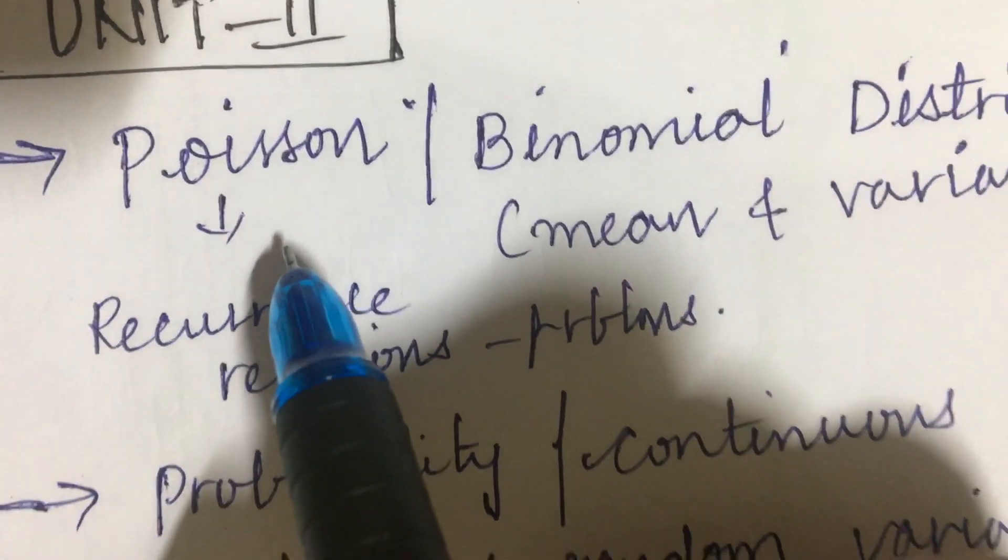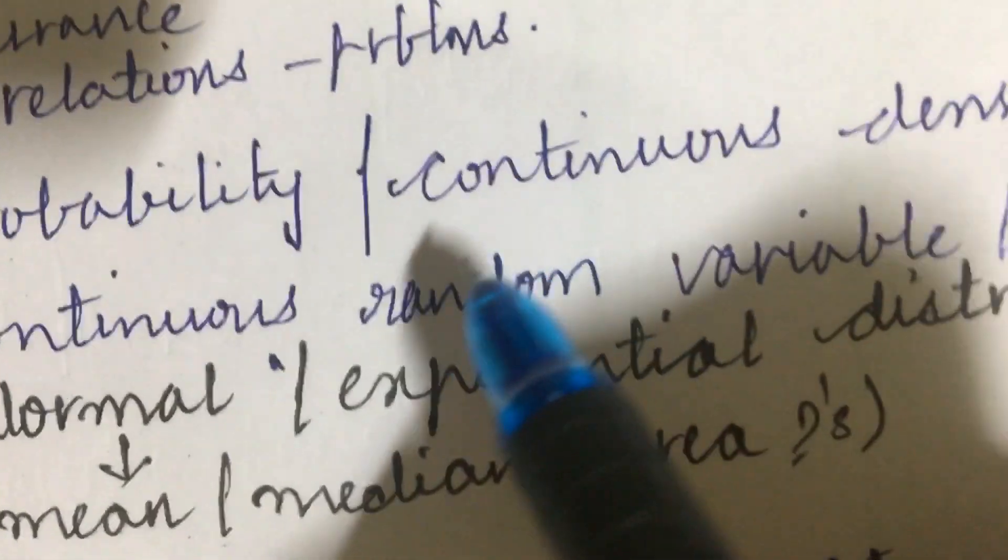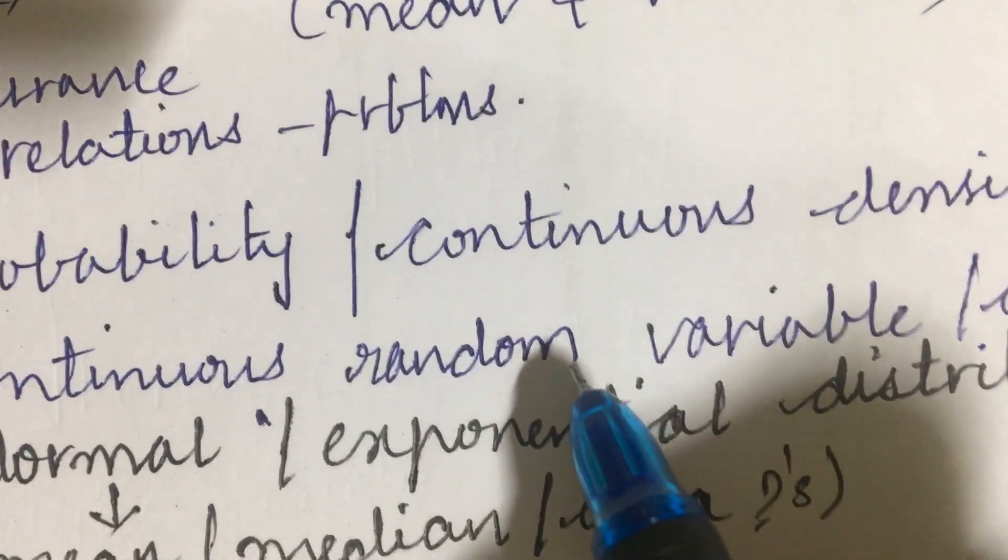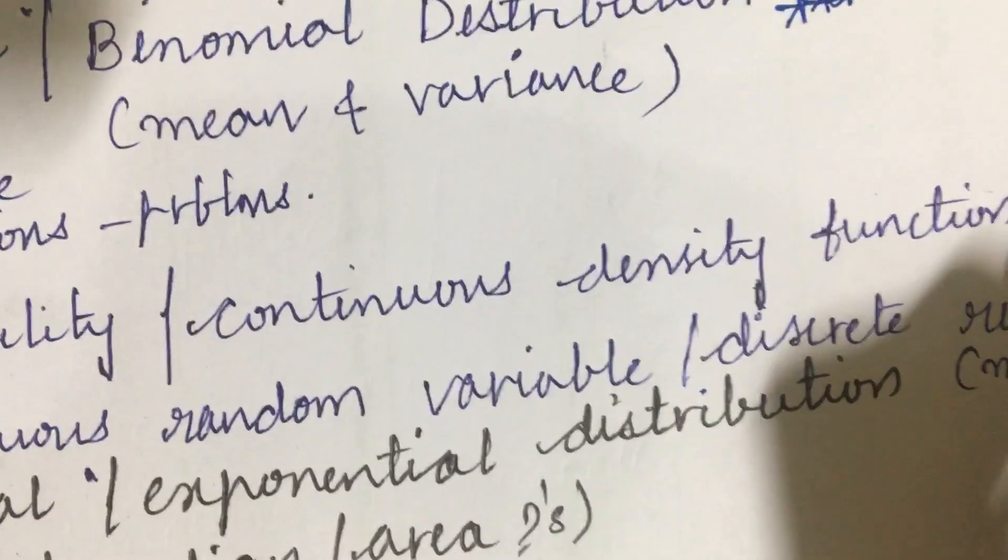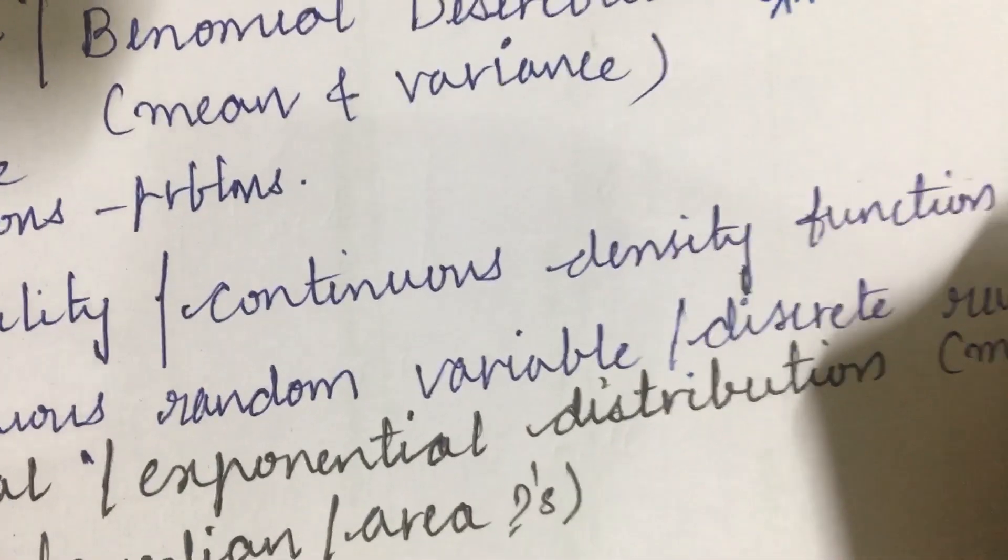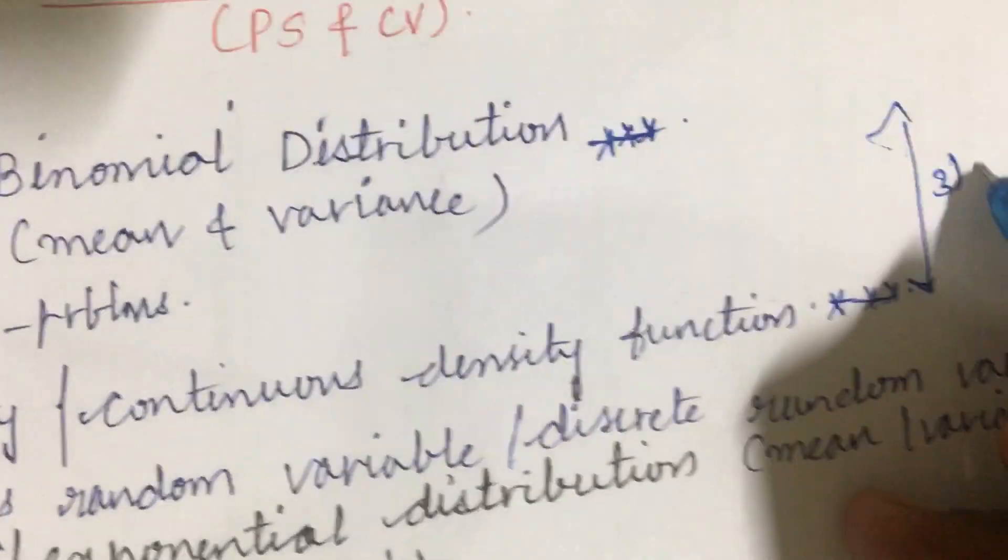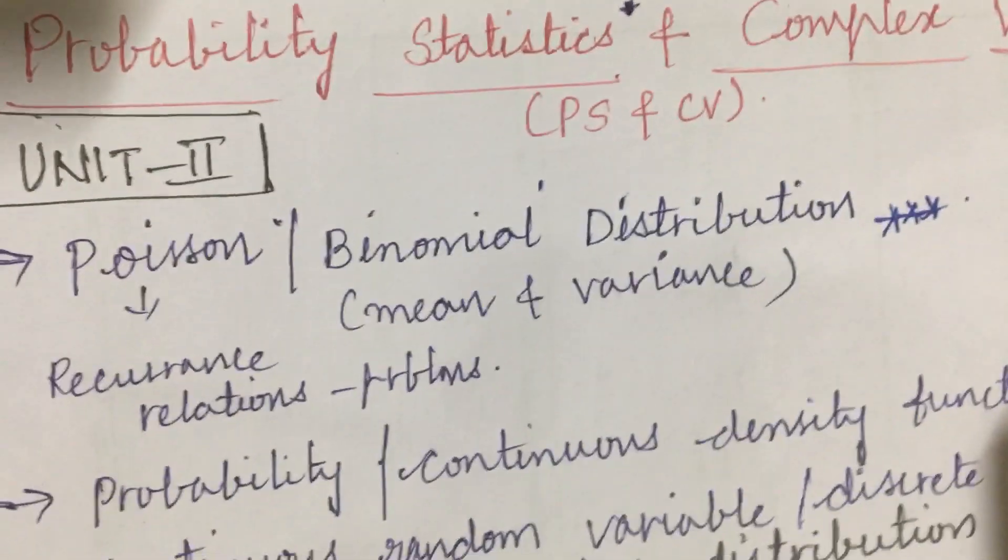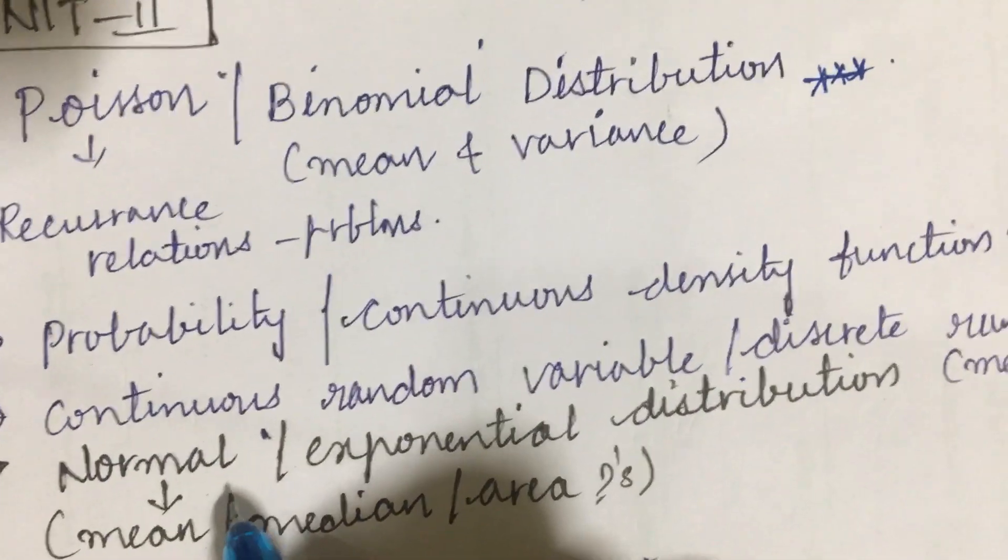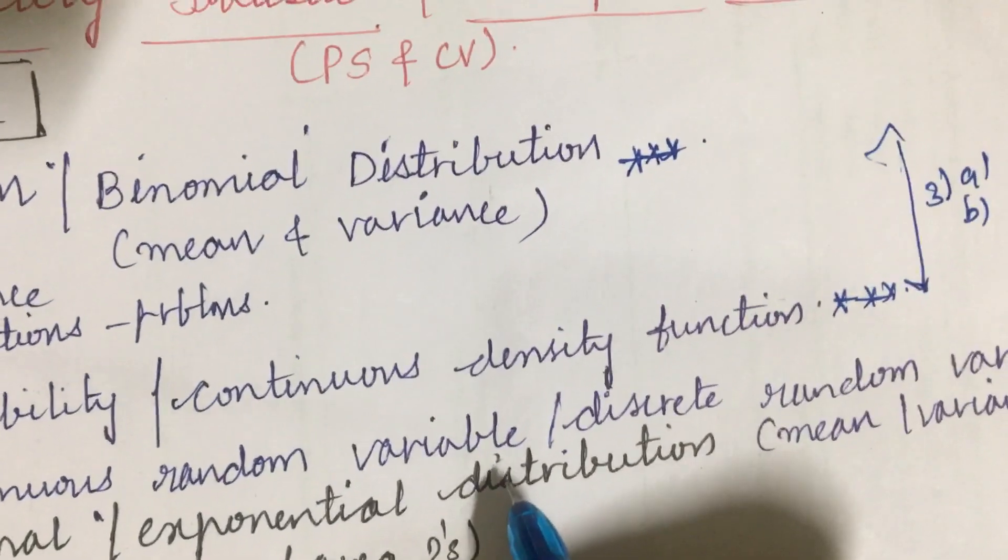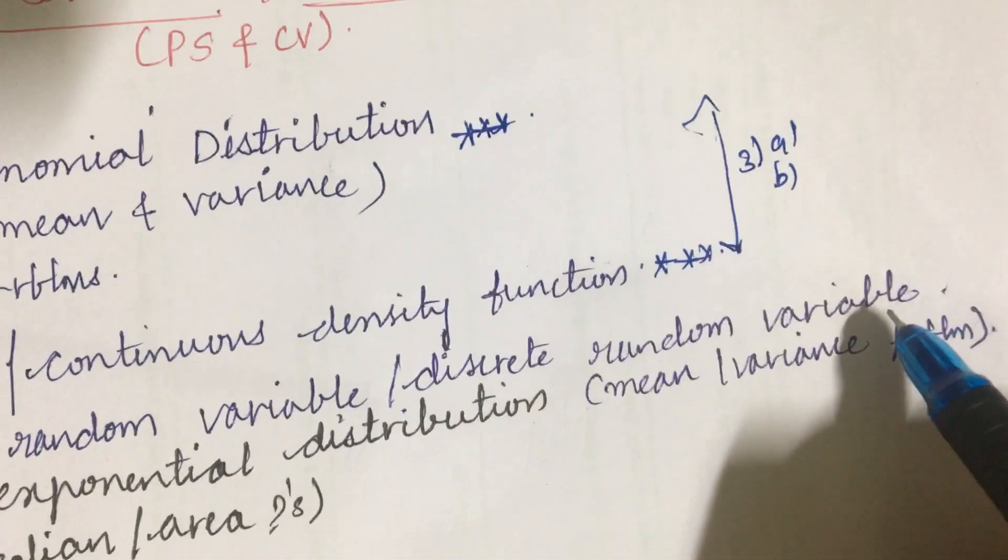Please do work out all the relations related to this. Later the probability density function or the continuous density function, their definitions as well as the problems. And from this part you will be getting the question, I mean 3A as well as 3B.